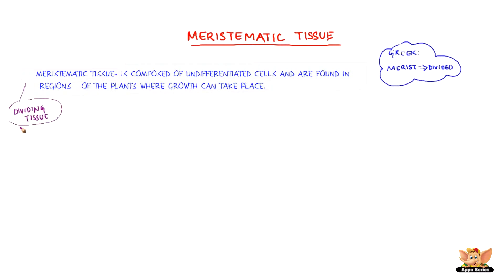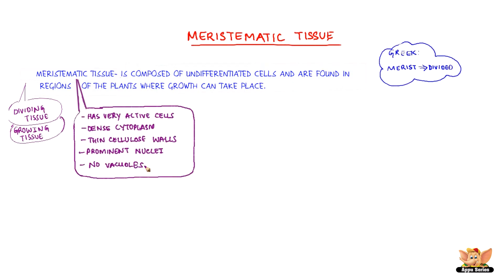This tissue is also referred to as dividing tissue or growing tissue. This tissue has very active cells having dense cytoplasm, thin cellulose walls and prominent nuclei. They do not have vacuoles as there is no need of food storage.